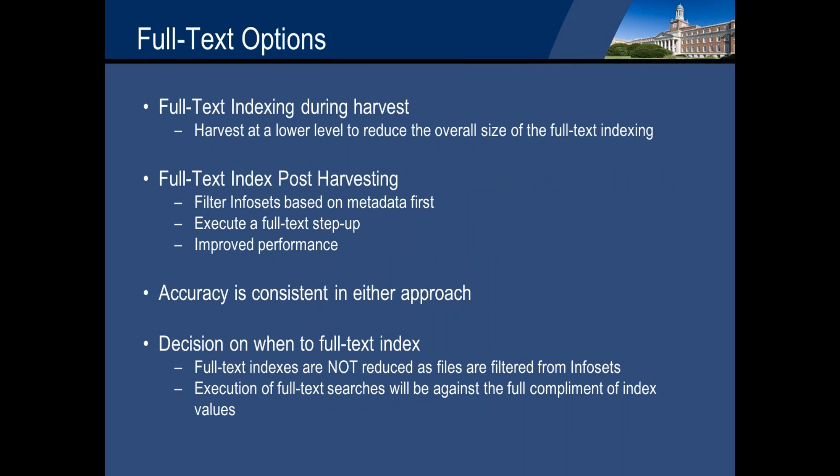Full text indexing is a very interesting thing to deal with within the StoredIQ tool. It's very powerful, but it also comes with some cautions. The first thing is when you're doing full text indexing during a harvest, you have that option. I suggest that you harvest at a lower level to reduce the overall size of full text indexing. Another option is to full text index post-harvesting — so you'll harvest, filter down that info set based on metadata values first, such as file name, age, location, and then execute a full text step-up on that remaining info set.